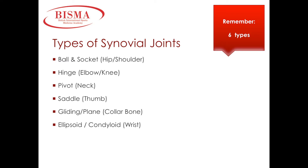Examples of hinge joints are at the knee and elbow. A pivot joint is where movement is solely rotational — an example of this is at the neck. The saddle joint is where you have two surfaces, a concave and a convex, and the concave slides within the convex. An example can be found at the base of the thumb. The gliding or plane joint is where movement is usually across a flat surface, and with the condyloid joint, movement only occurs within two planes.